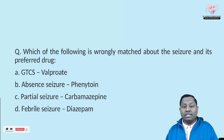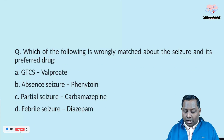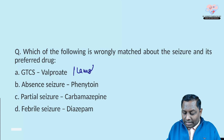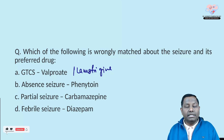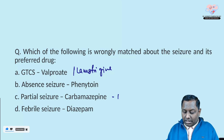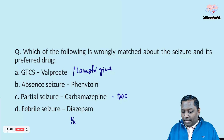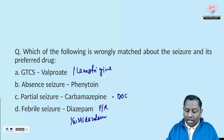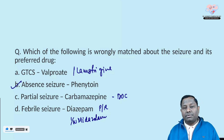The fourth question asks which is wrongly matched regarding seizure type and its preferred drug. GTCS — preferred drugs are valproate or lamotrigine. Partial seizure — carbamazepine is the drug of choice. Febrile seizure — rectal diazepam or intranasal midazolam, either can be used. Absence seizure — the drug of choice is ethosuximide, and phenytoin is actually contraindicated.